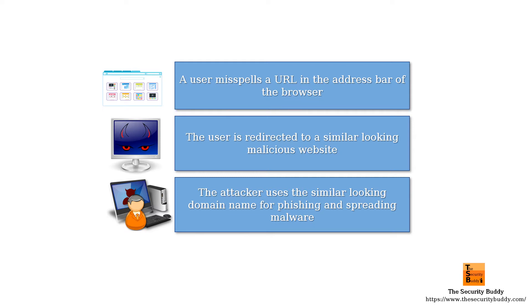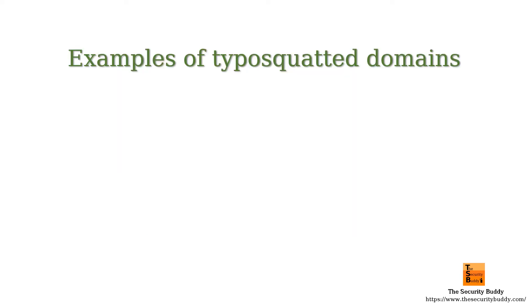Some common examples of typosquatting are domain names like googel.com, amazom.com, or apples.com. Please note the misspelling in these domain names.